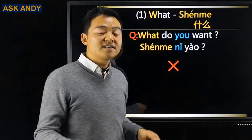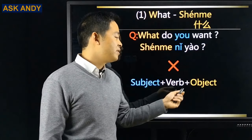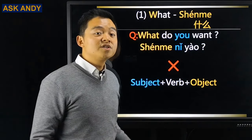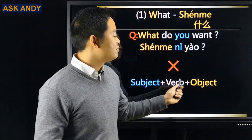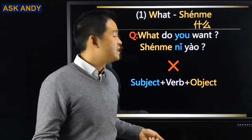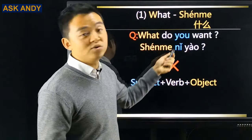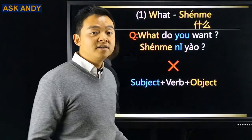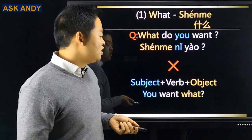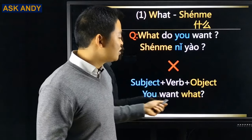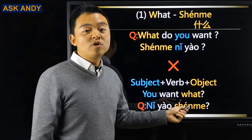The important pattern is: Subject – Verb – Object. In Chinese WH-questions, the word order doesn't change. So think in English as 'you want what?' and do a literal translation. 你 is subject, 要 is verb, 什么 is object. The result: 你要什么? (What do you want?)